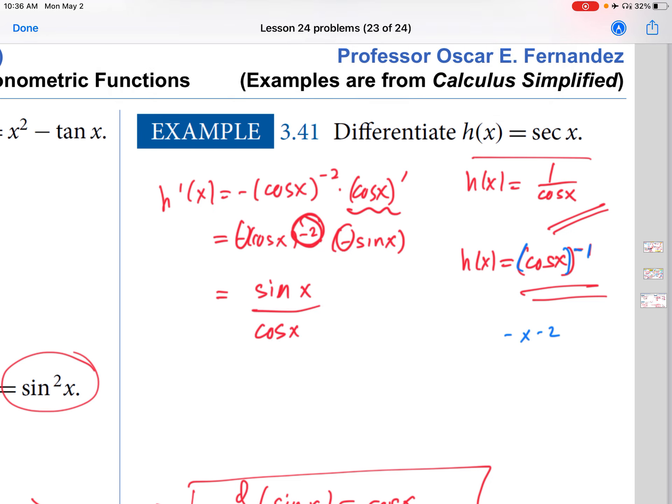Now, this negative and this negative go away. So I get sine x in the numerator. And then because this is to the negative 2, this goes downstairs, cosine of x squared.